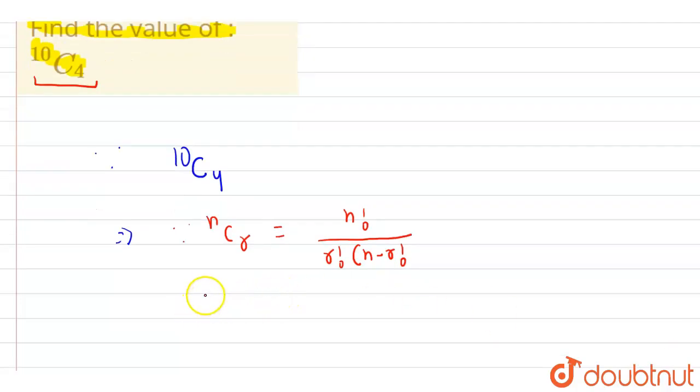we will do with 10C4 where 10 is our N and 4 is our R. So 10 factorial upon 4 factorial into 10 minus 4 factorial, right?